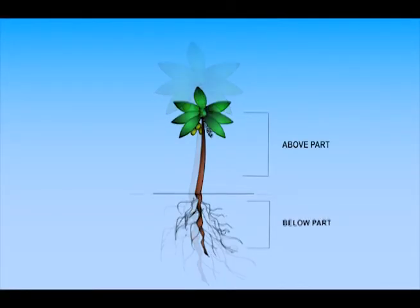A plant has some part above the ground and some part below. Part of plant above the soil is called shoot system.